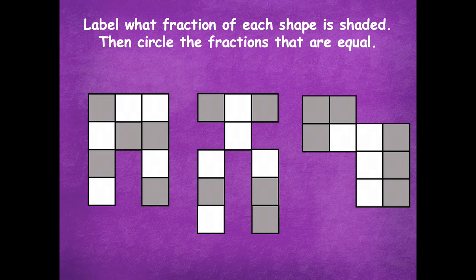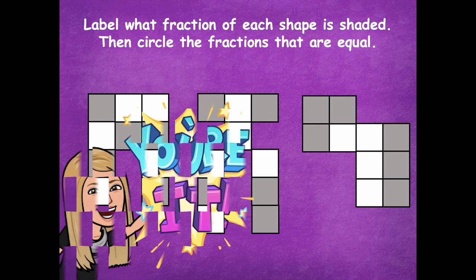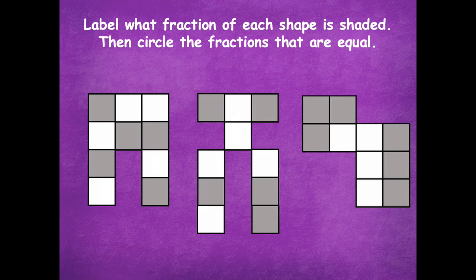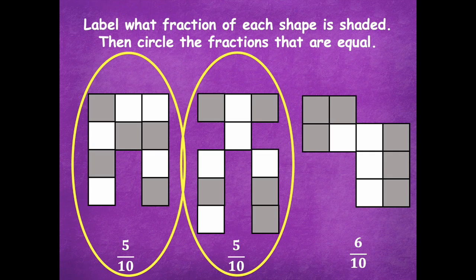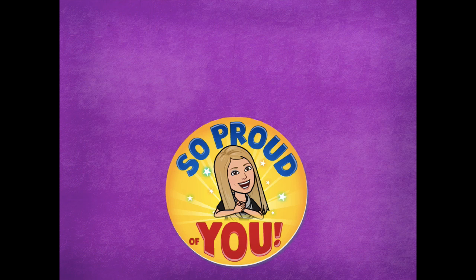Let's do another one. Write and label the fraction for each shape that is shaded, then circle the fractions that are equal or equivalent — pause the video and click play when you're ready. The first shape is five tenths — five parts shaded, ten total parts. The second one is five tenths, and the third is six tenths. The two that are equivalent are the first two shapes.